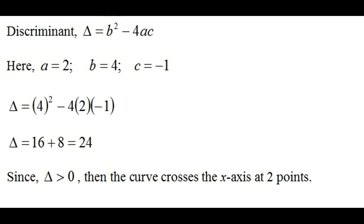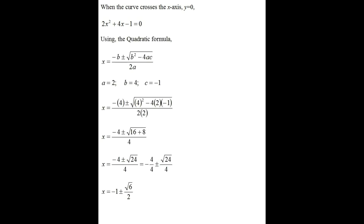To work out the coordinates where the curve crosses the x-axis, remember that when the curve crosses the x-axis the y-coordinate is 0. Setting y equals 0 gives 2x squared plus 4x minus 1 equals 0. This is not factorisable, so we use the quadratic formula, giving x equals minus 1 plus or minus root 6 over 2. Hence the curve crosses the x-axis at two points with coordinates (minus 1 plus root 6 over 2, 0) and (minus 1 minus root 6 over 2, 0). This justifies our discriminant analysis.